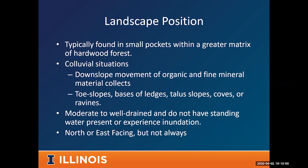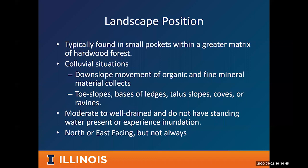These sites need to be moderate to well-drained — not experiencing standing water or frequent inundation — but they get plenty of moisture that moves through without ponding. They're often north- or east-facing, which are slightly cooler aspects, and you tend to find the richest mesic woods on those aspects, though it's not always the case.